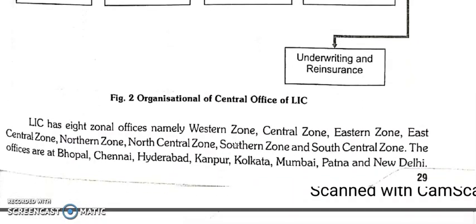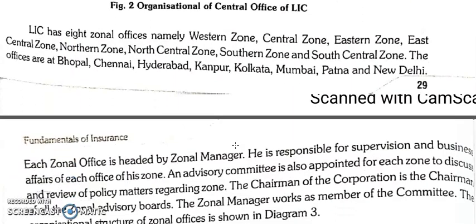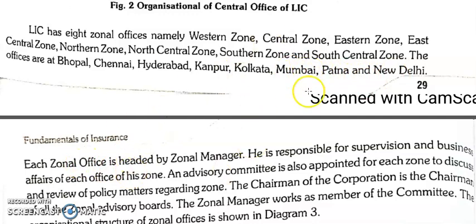LIC has eight zonal offices: western zone, central zone, eastern zone, northern zone, north central zone, southern zone, and south central zone. These offices are located in Bhopal, Chennai, Hyderabad, Kanpur, Kolkata, Mumbai, Patna, and New Delhi. The head of the zonal office is the zonal manager, who works as a member of the committee.